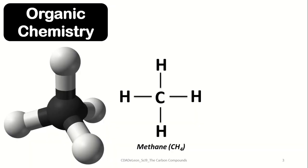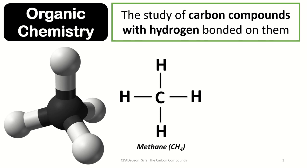We'll be focusing on a specific branch of chemistry named organic chemistry. Organic chemistry refers to the branch of chemistry that deals with the study of different carbon compounds with an attached hydrogen atom. An example of an organic compound is methane, which is made up of one atom of carbon together with four atoms of hydrogen bonded on it.